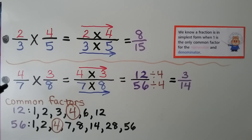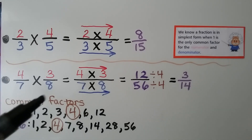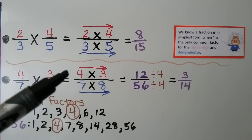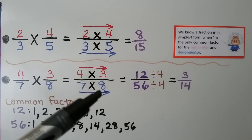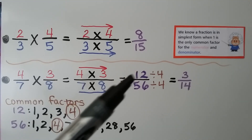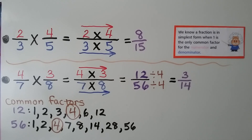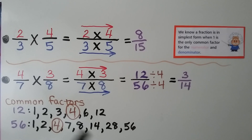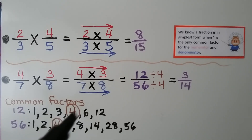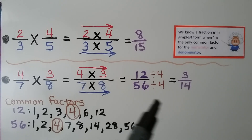Here we have 4 sevenths times 3 eighths. We can write it as 4 times 3 over 7 times 8, and that's equal to 12 fifty-sixths. We need to write it in simplest form. We can list their common factors. For 12 and 56, their greatest common factor is 4. We divide 12 by 4 and 56 by 4, and we get 3 fourteenths.